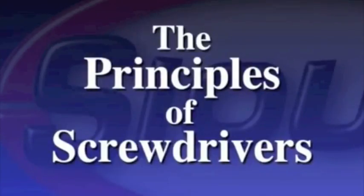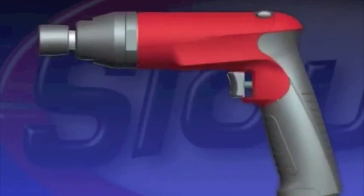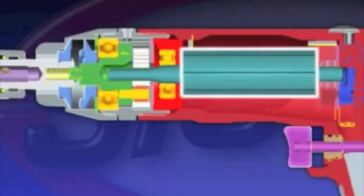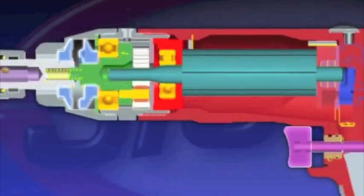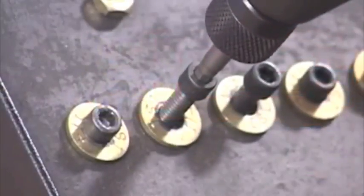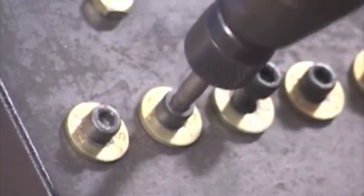The Principles of Screwdrivers. The operation of a screwdriver uses an air motor and planetary gearing to drive a clutch spindle, producing torque in a fastener. The action of the torque creates clamp load in an assembly.